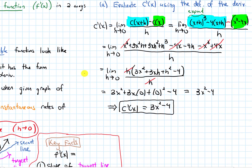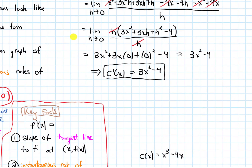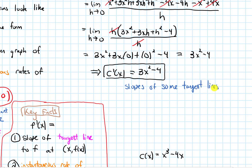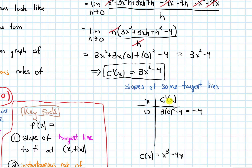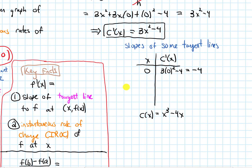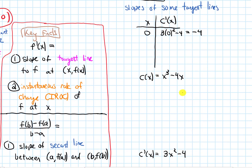Now let's show what we can do with this derivative. Let's use it to write down the slopes of some tangent lines. I'll make a table tracking x and the derivative value, since the derivative represents the slope of the tangent line. Plugging in x equals 0: 3 times 0 squared minus 4 equals negative 4. That tells me when x equals 0 on the graph, the slope of my tangent line should be negative 4.